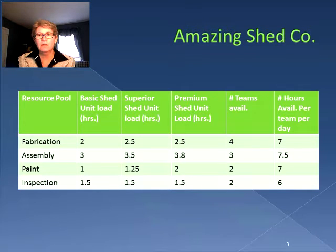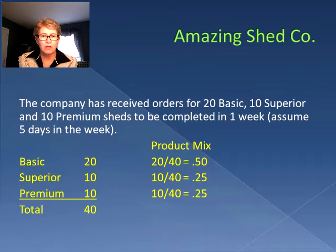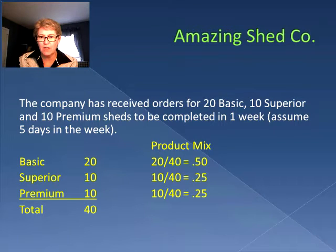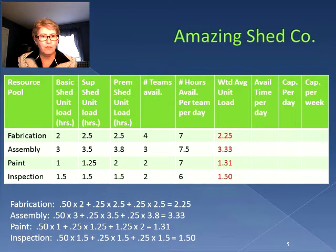The first thing we need to do is figure out what the average unit load is. We have three different kinds of sheds, each with a different unit load, so we need to find the weighted average unit load. We know that we're doing 20 basic, 10 superior, and 10 premium sheds in the week, giving us a total of 40 sheds. So our product mix is 50% basic, 25% superior, and 25% premium. Using this product mix, we can calculate the average unit load for each of the different resource pools.